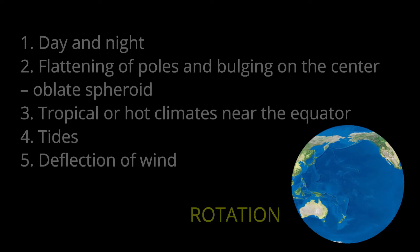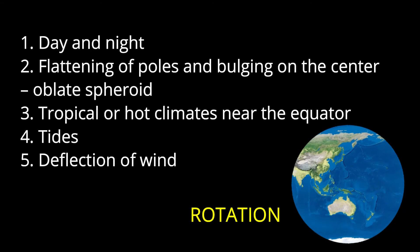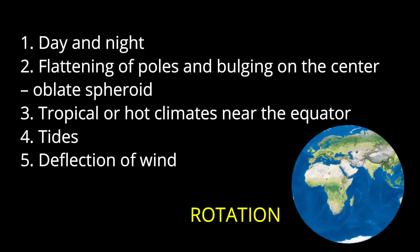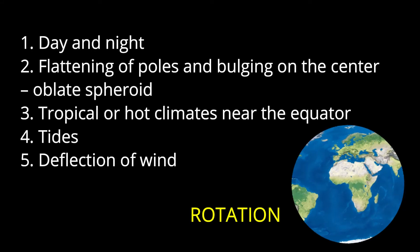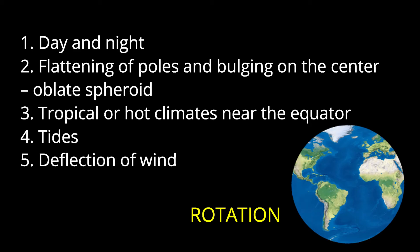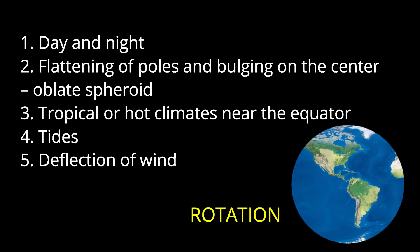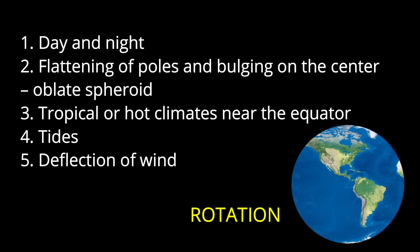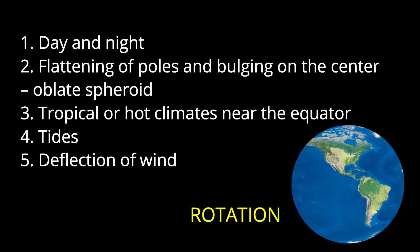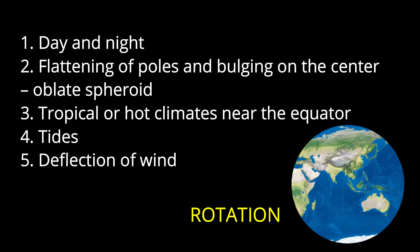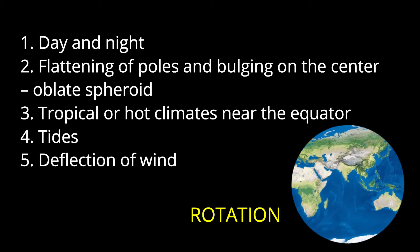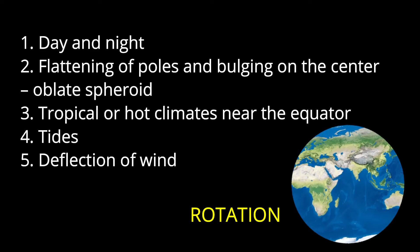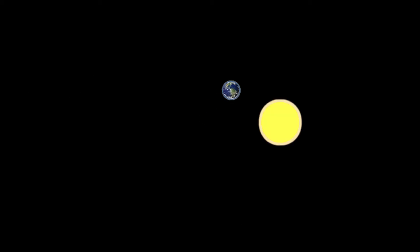As a recap, here are the effects of the Earth's rotation: 1. Day and night. 2. Flattening of the poles and bulging of the center, making the Earth an oblate spheroid. 3. Tropical or hot climates near the equator. 4. Tides. 5. Deflection of wind. How about revolution? What are its effects?